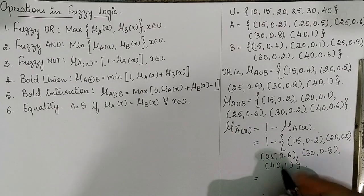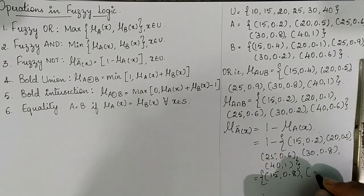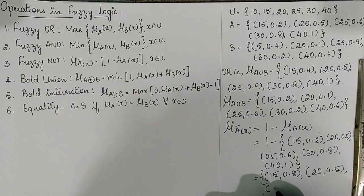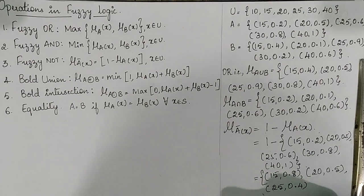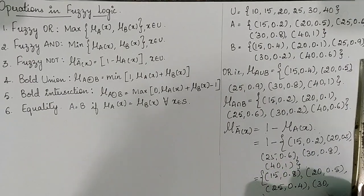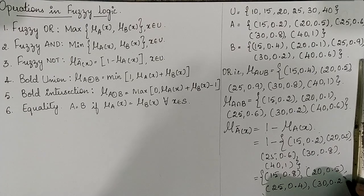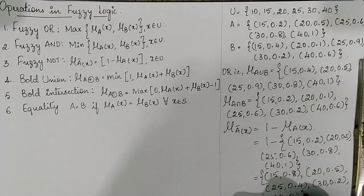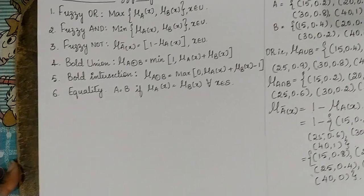The complement results are: 15→(1−0.2)=0.8, 20→(1−0.5)=0.5, 25→(1−0.6)=0.4, 30→(1−0.8)=0.2, and 40→(1−1)=0. This is how we perform the complement operation.